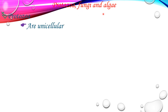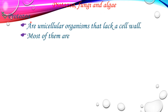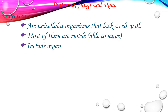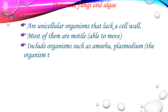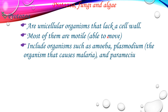The first group — protozoa. Protozoa are unicellular organisms that lack a cell wall. They are made up of a single cell, and they do not have a cell wall, which gives protection and support for the cell.